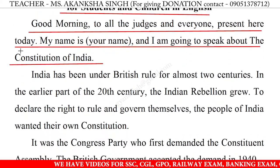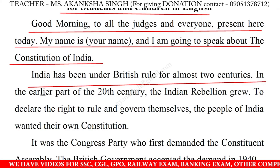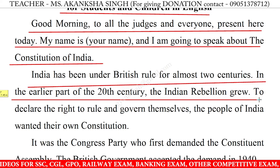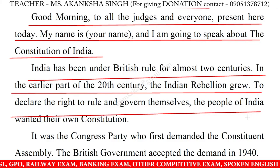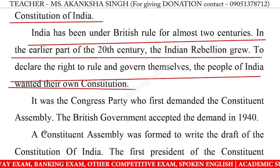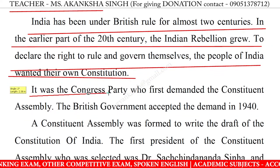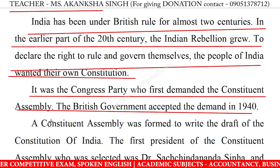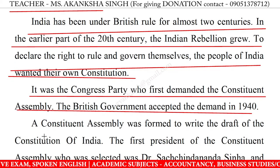India has been under British rule for almost two centuries. In the earlier part of the 20th century, the Indian rebellion grew to declare the right to rule and govern themselves. The people of India wanted their own constitution. It was the Congress party who first demanded the Constituent Assembly, and the British government accepted the demand in 1940.